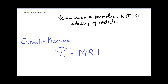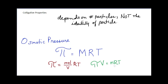Rearranging the osmotic pressure equation, we see that it is essentially PV = nRT — the ideal gas law — except we're not talking about a gas; we're talking about osmotic pressure pushing on a liquid. That's why we use pi instead of P. Molarity is moles per liter, so rearranging gives us the familiar ideal gas law form. You would be given enough information to calculate osmotic pressure if that is what you're looking for.